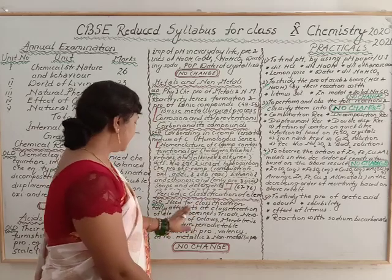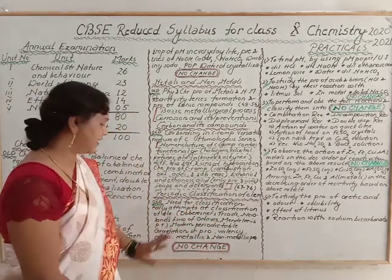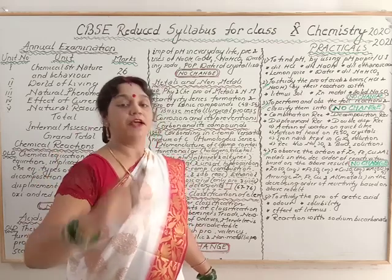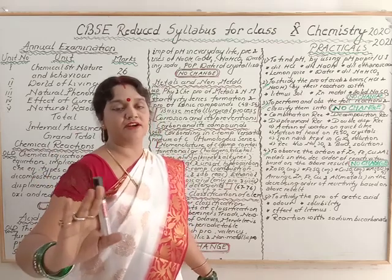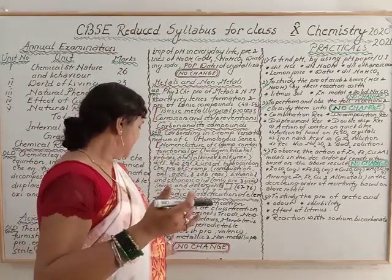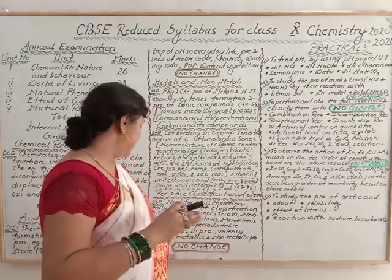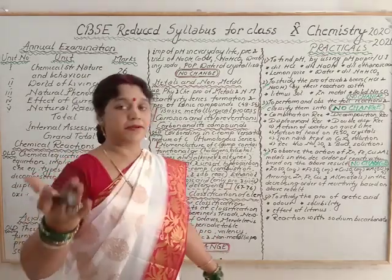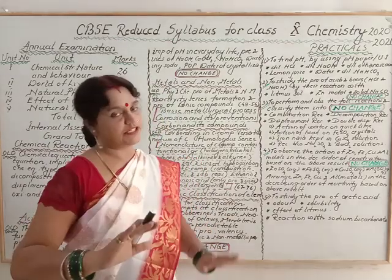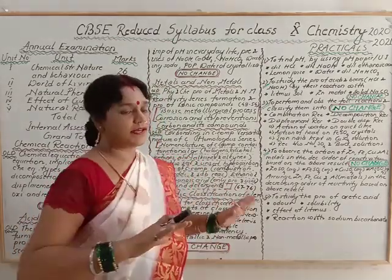To recap: need for classification, earlier attempts of classification of elements, Döbereiner's triads, Newland's law of octaves, Mendeleev's periodic table, modern periodic table, gradation in properties — how properties increase and decrease across the periodic table, valency, atomic number, metallic and non-metallic properties. All of this needs to be studied.